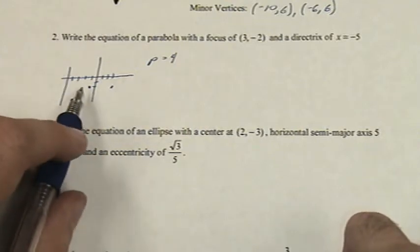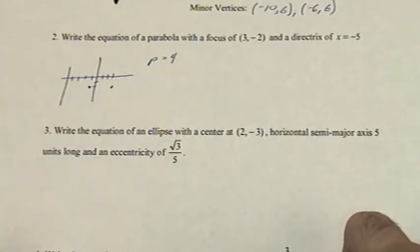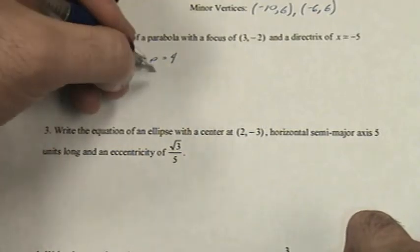The dot that I just created, halfway in between the directrix and the focus, is our vertex. Looks like this is at negative 1, negative 2.